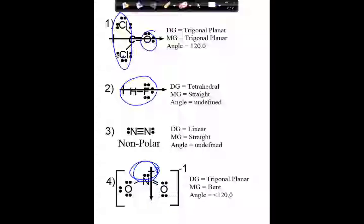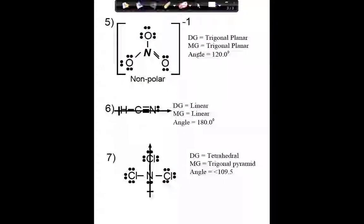Let's go through the rest of this assignment. Looking at number five: no unbonded electrons, all the atoms are the same — that guy is nonpolar. Looking at number six: nitrogen is not hydrogen — that guy is polar. Looking at number seven: unbonded electrons — that's polar.